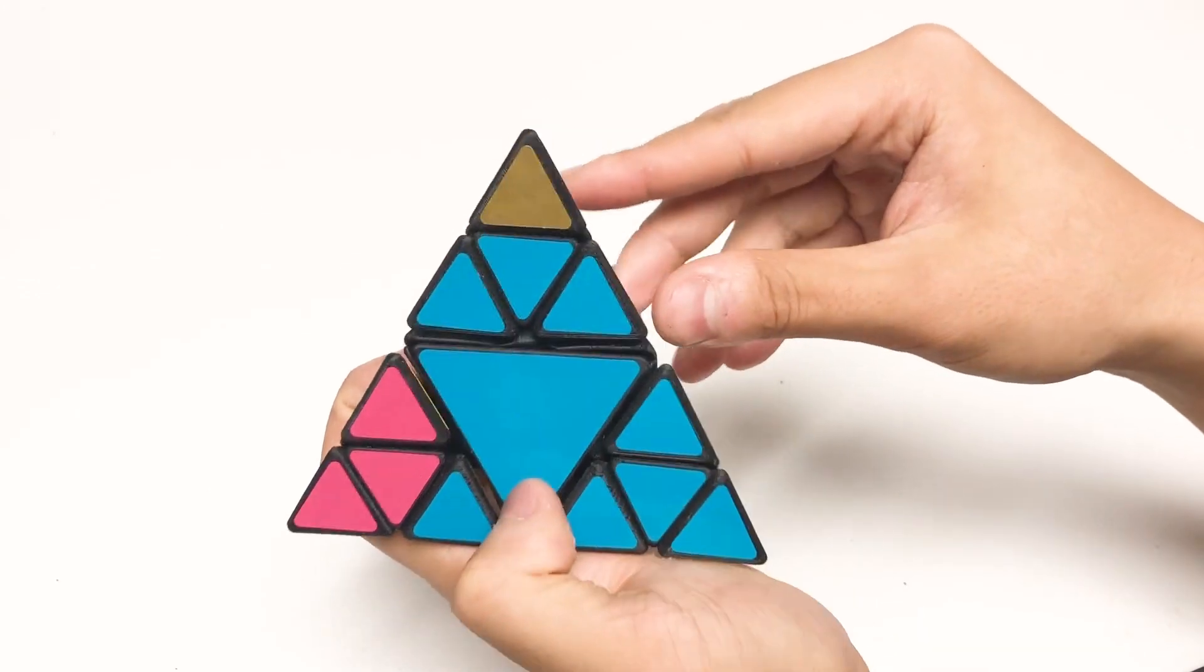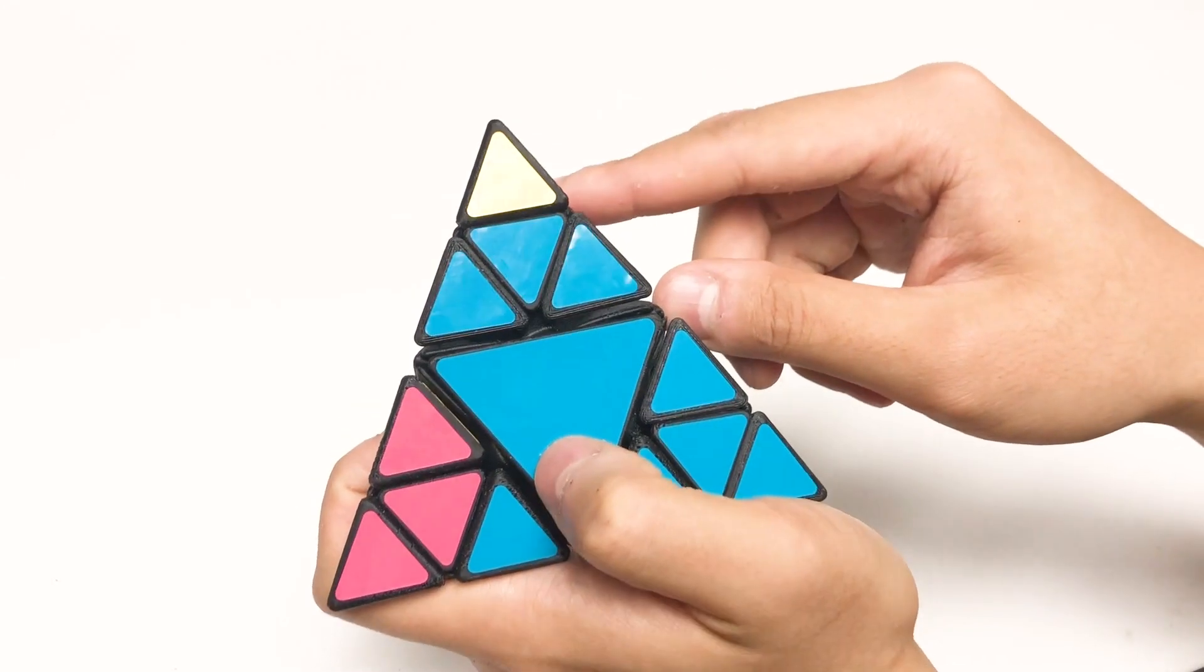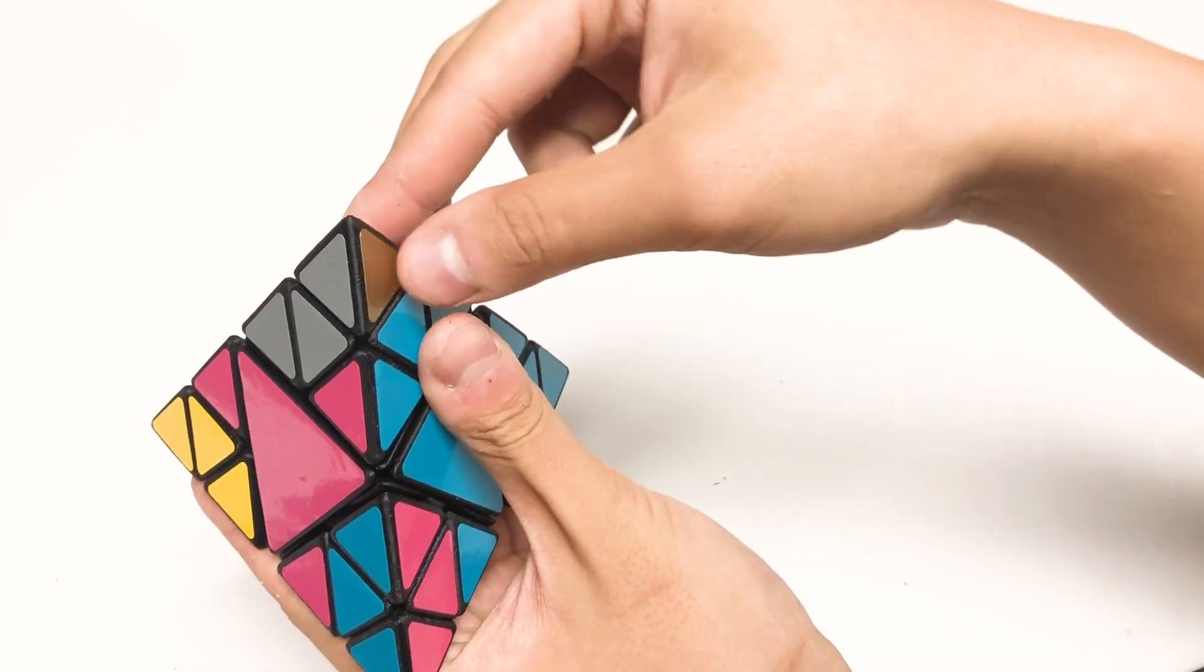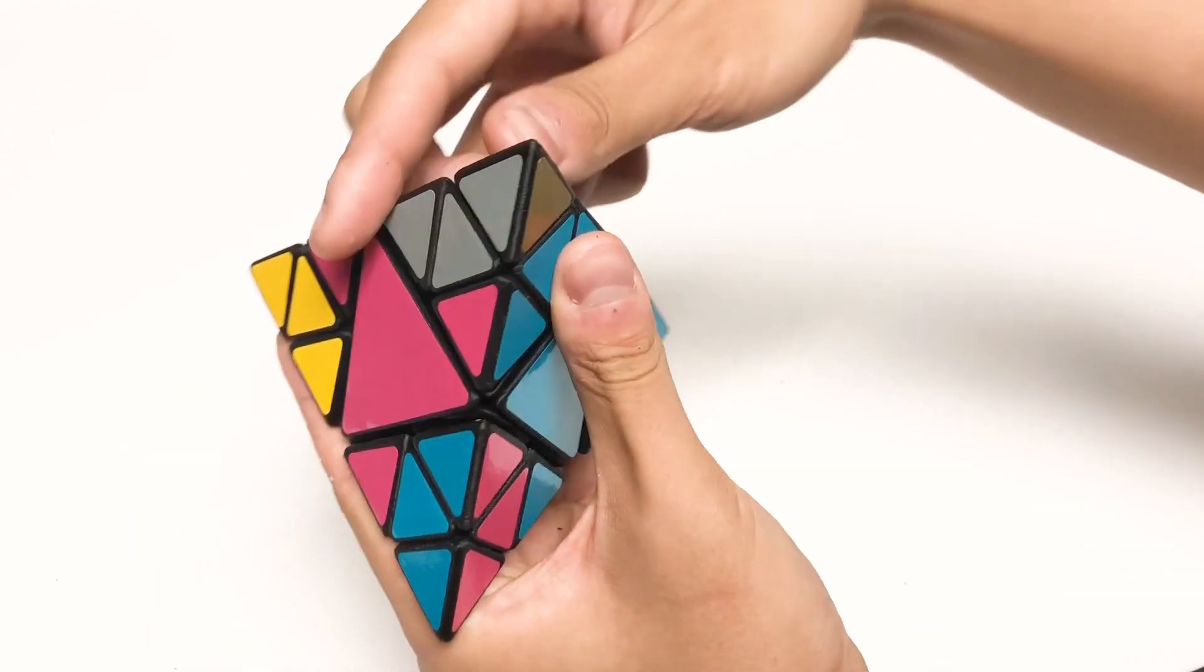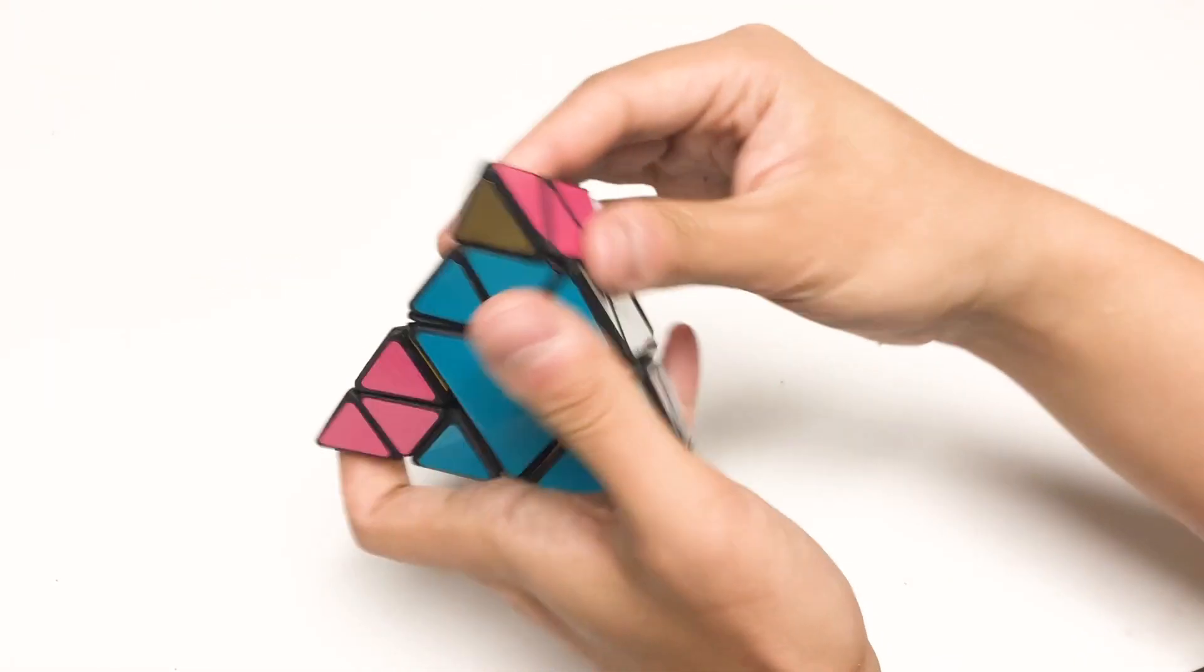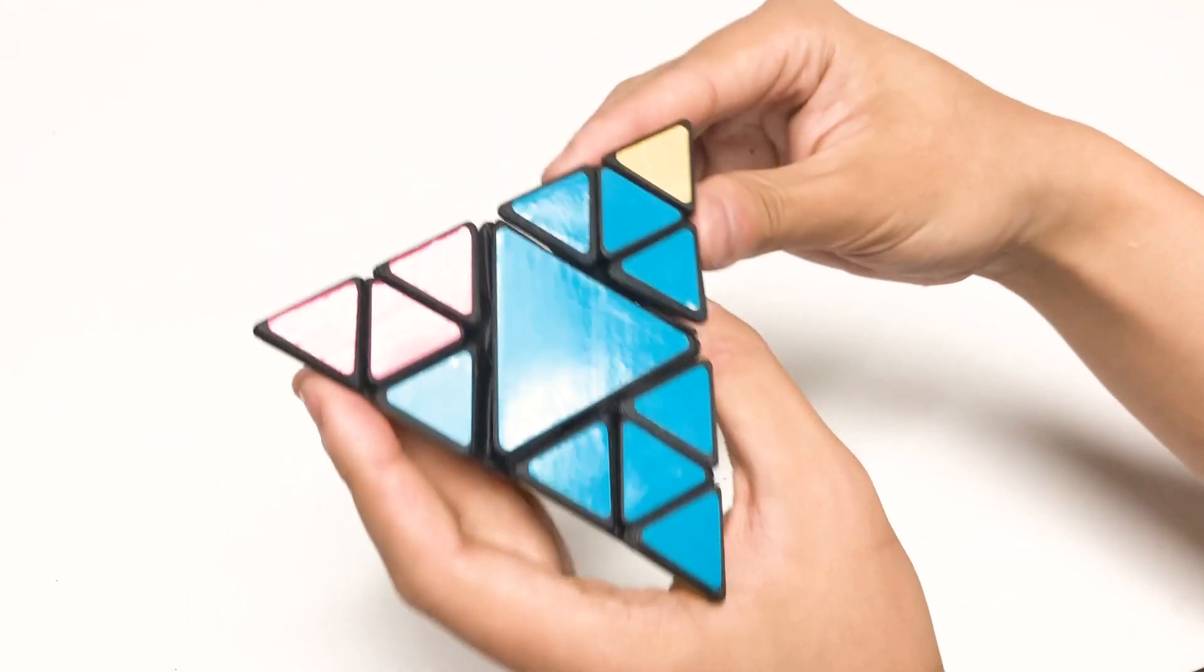I've stickered the pieces that are normally hidden. You'll notice when I turn an edge this sticker is normally hidden inside the puzzle. I've stickered them in gold just to give it an interesting appearance.